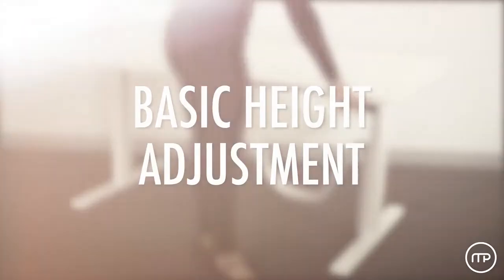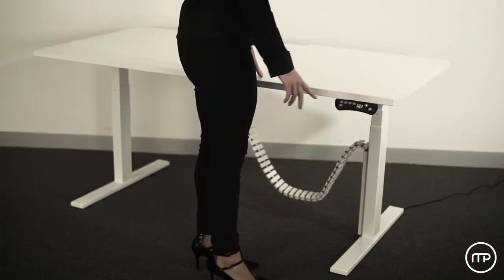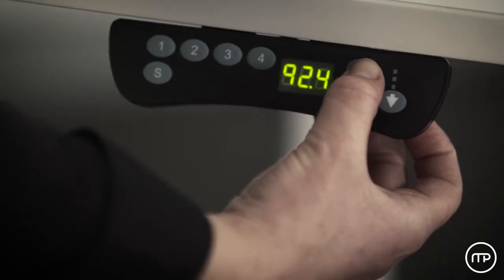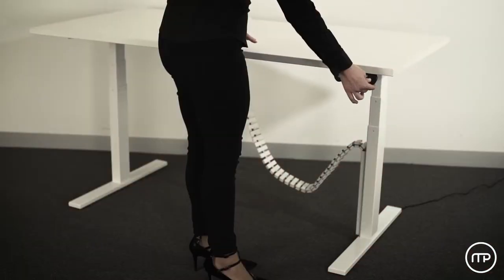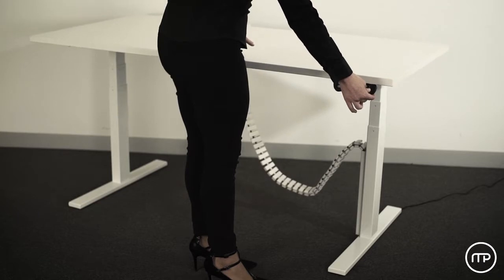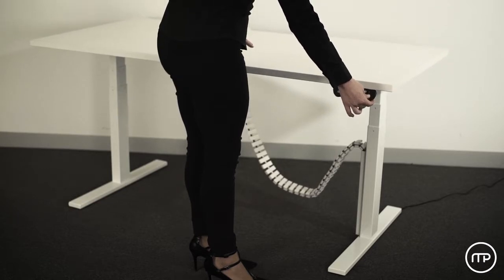Basic Height Adjustment: To adjust the worktop up, simply press and hold the up button until the worktop reaches the desired height and release. To adjust the worktop down, press and hold the down button to the desired height and release.